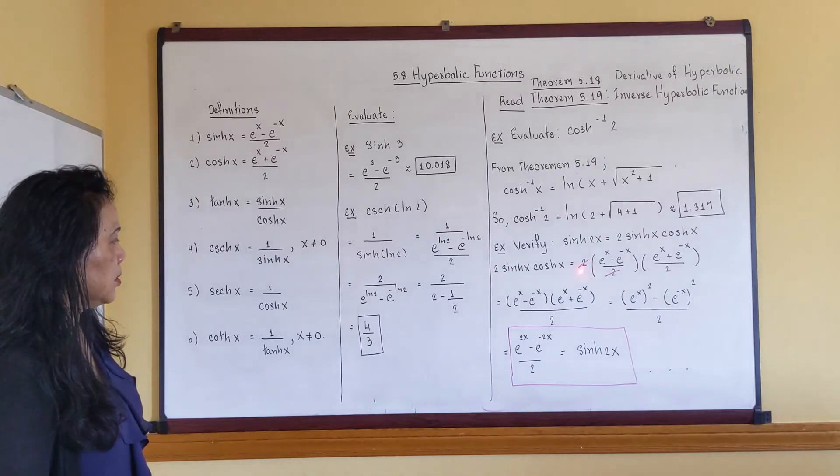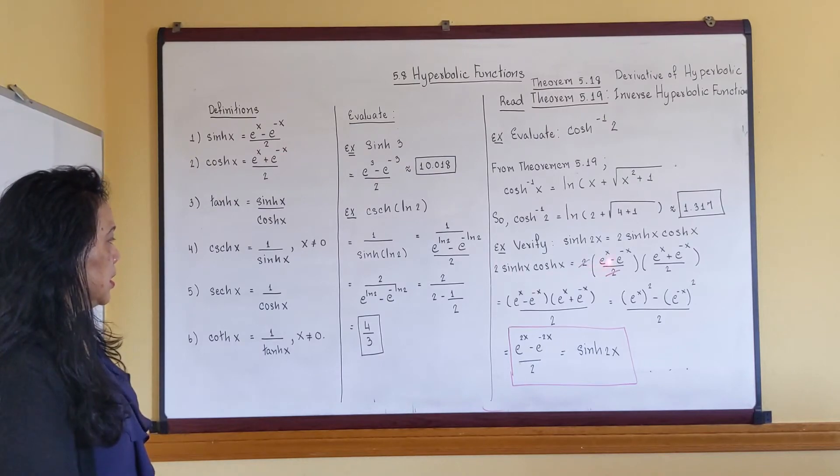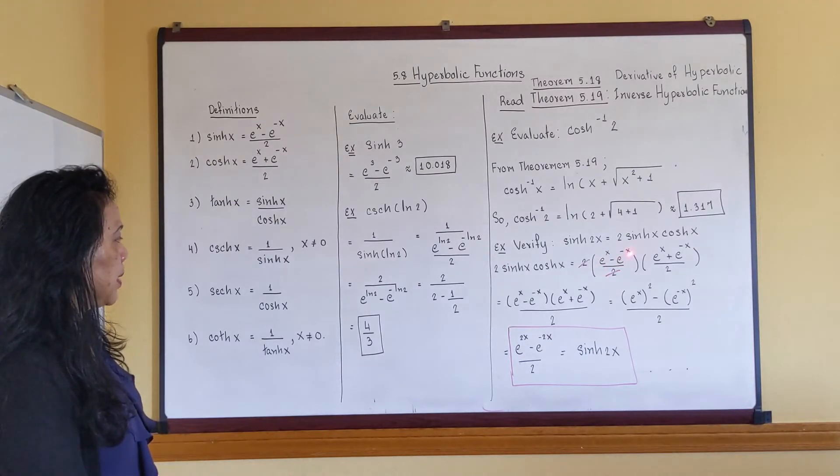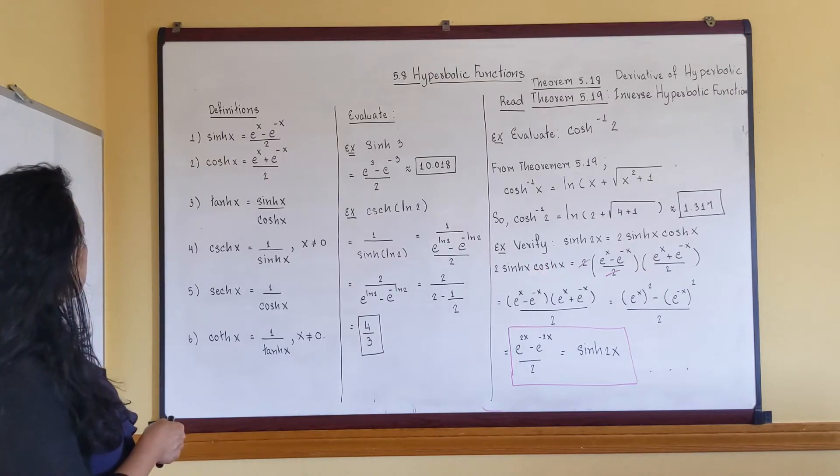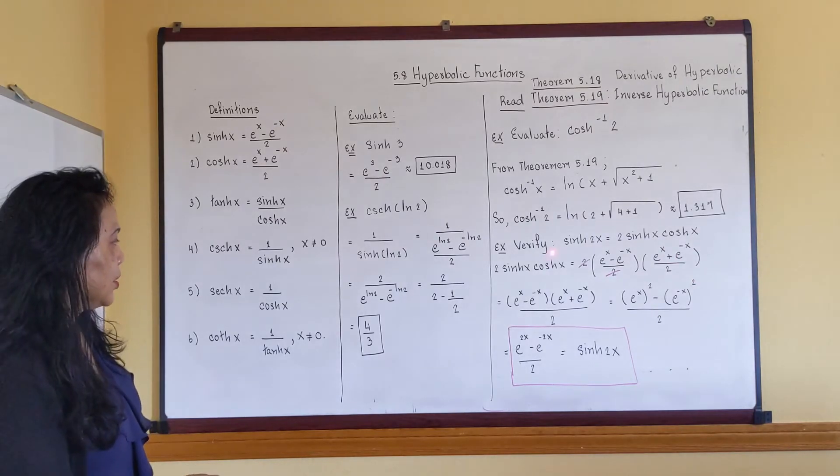And as you can see, number two is just number two hyperbolic sine. I use this formula here which is e to the x minus e to the minus x over two. Hyperbolic cosine, I just apply the definition here, it's over here. I cancel the two, straightforward.